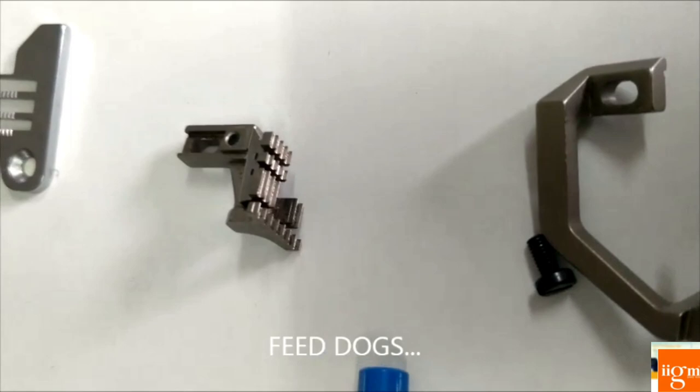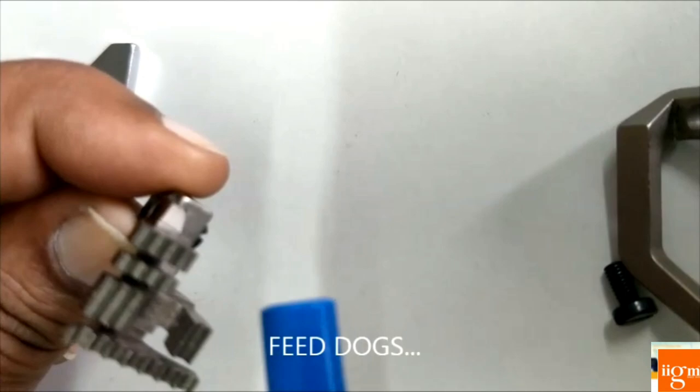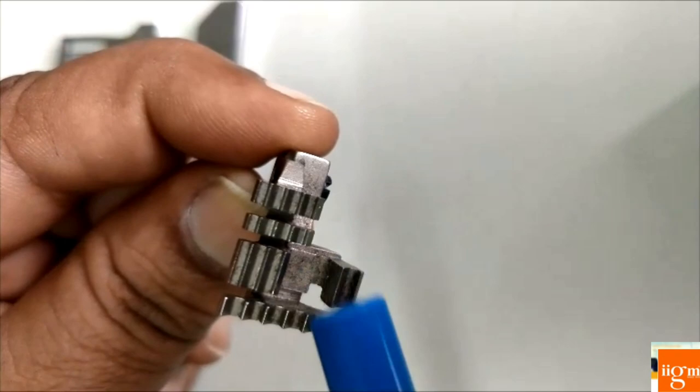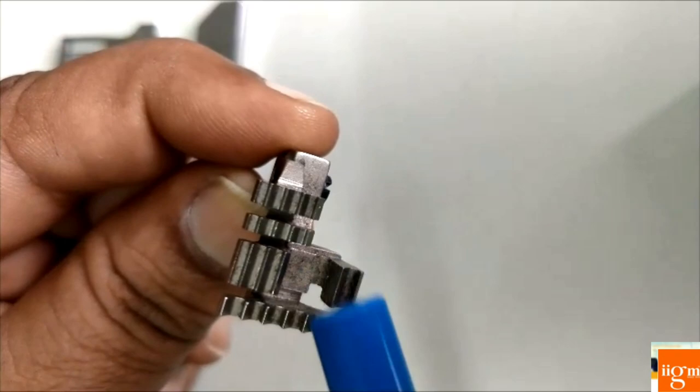3 types of feed dogs. One is main feed dog which is supported by one more small feed dog called auxiliary feed dog. We have a separate screw for this main feed dog and auxiliary feed dog. These two feed dogs move together.